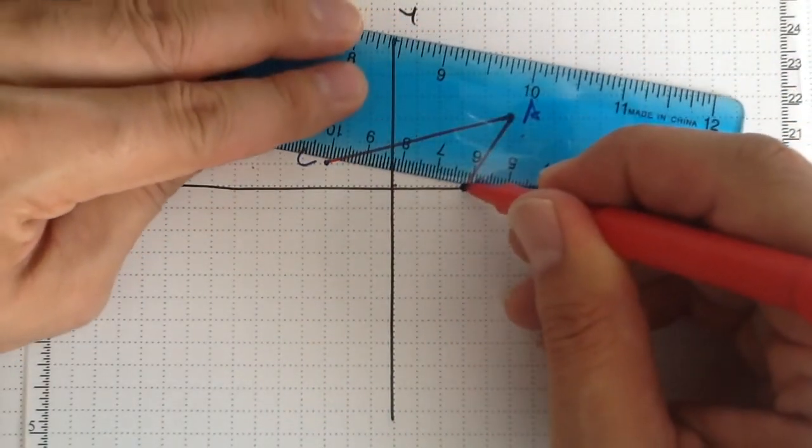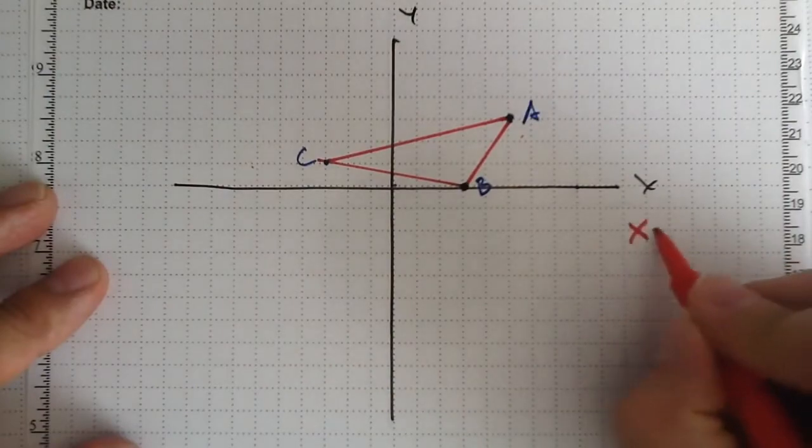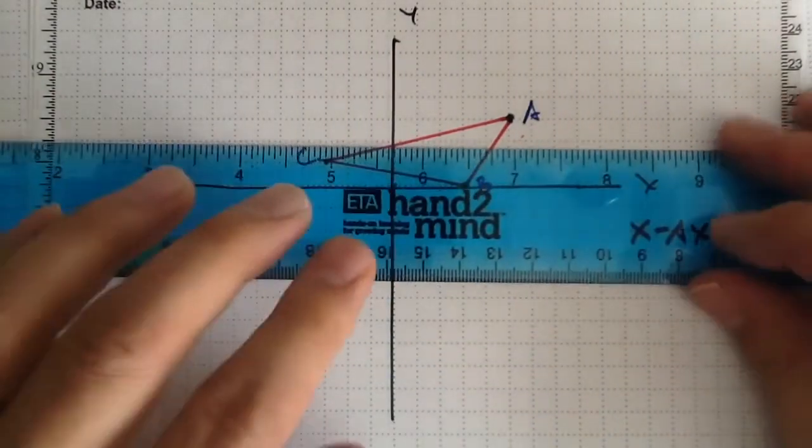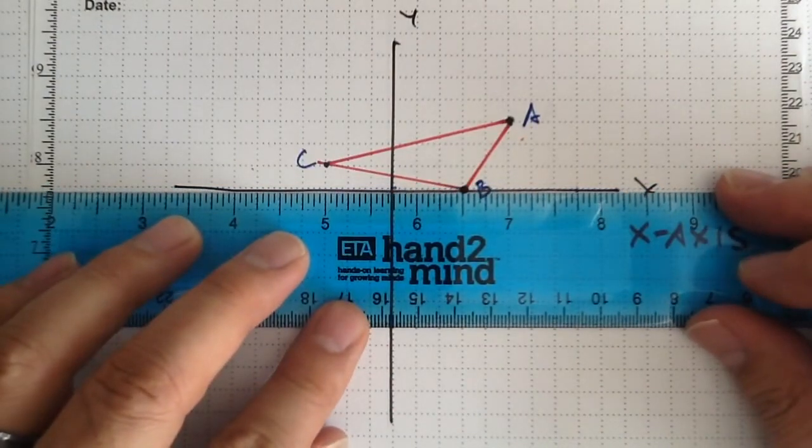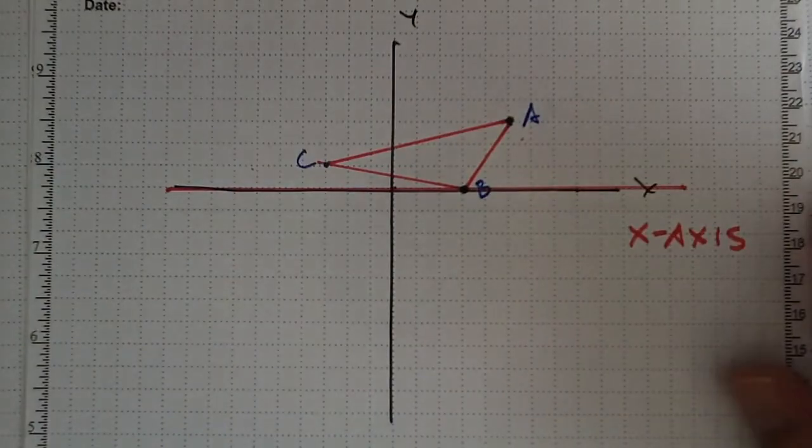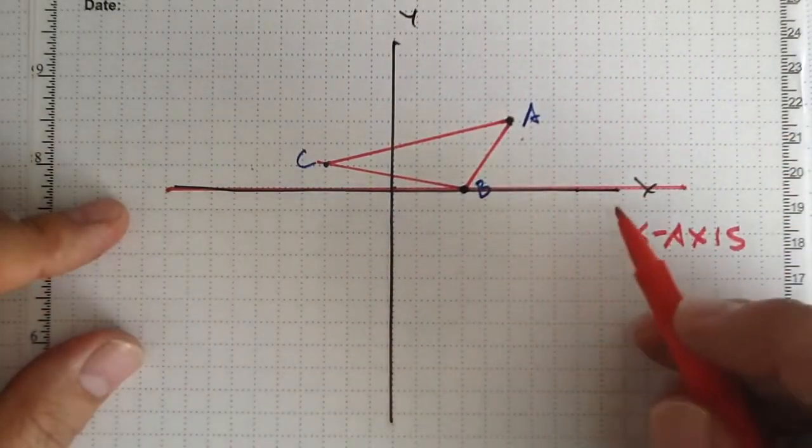In this case, just to show this example first, we're going to make the x-axis the line of reflection. In other words, you have to imagine, even though there's already a line drawn here, that the line itself for our line of reflection is on the x-axis itself. So the x-axis is acting like a mirror.